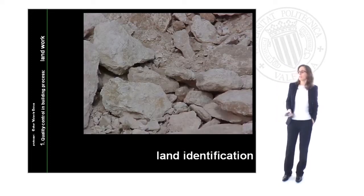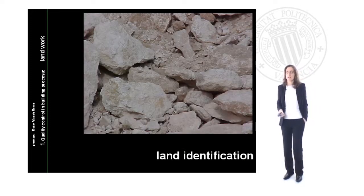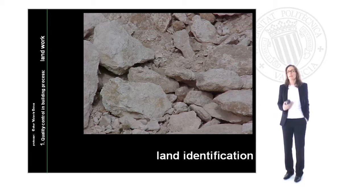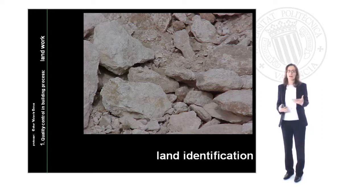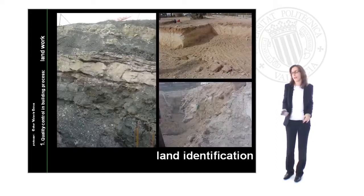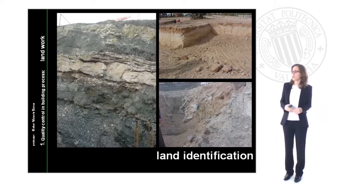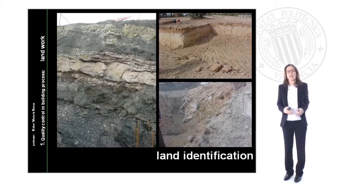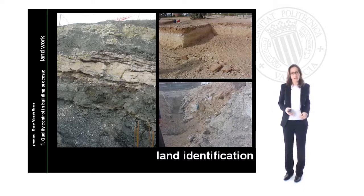Land identification is an important operation that the work director must perform during the building process. Using senses such as sight, smell, and touch, you must verify that the land identification matches the information in the geotechnical study. This means confirming that the levels, strata, and characteristics of the land in your parcel are the same as those described in the geotechnical study.